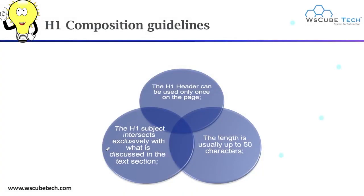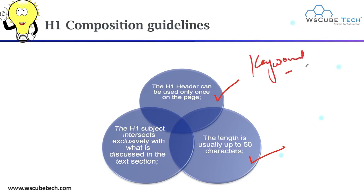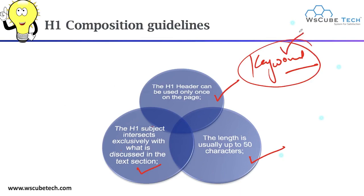Here are some H1 composition guidelines. The H1 header can be used only once on a page. The length is usually up to 50 characters. You must include your keyword in your H1 tag. The H1 subject must intersect exclusively with what is discussed in the text. Whatever primary keyword you decide on, you must mention it in your H1, or the title of your page.